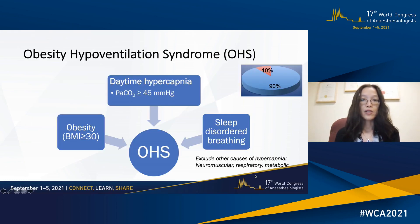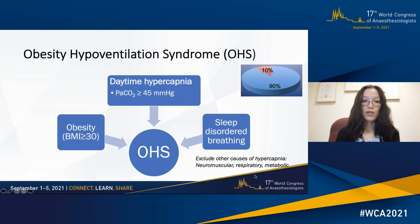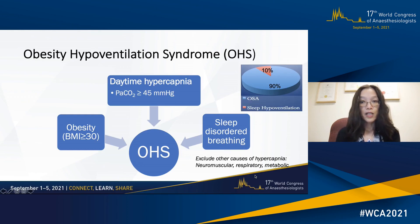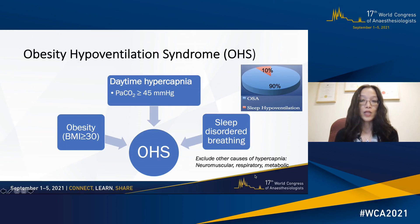Obesity hypoventilation consists of a triad of obesity — so BMI greater than or equal to 30 — and sleep disordered breathing. In 90% of cases, the sleep disordered breathing is obstructive sleep apnea. However, in 10% of cases, the sleep disordered breathing is non-obstructive sleep hypoventilation.